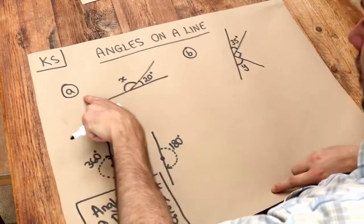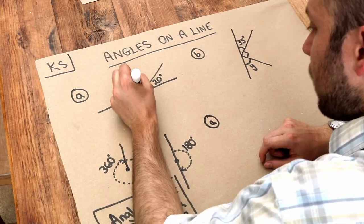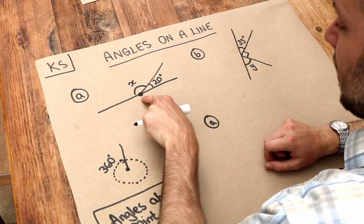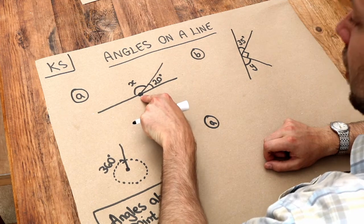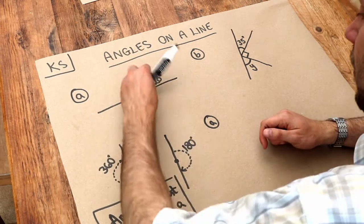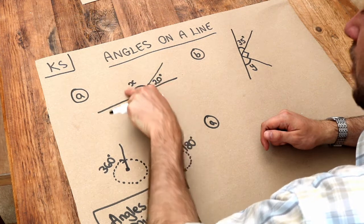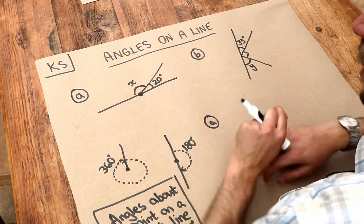So let's use that for this first problem here. We can see this is the point we're considering the angles about. Always identify first what point you're considering the angles around. And we can see on this straight line here, that is half a spin of my pen. So those angles must add up to 180 degrees.